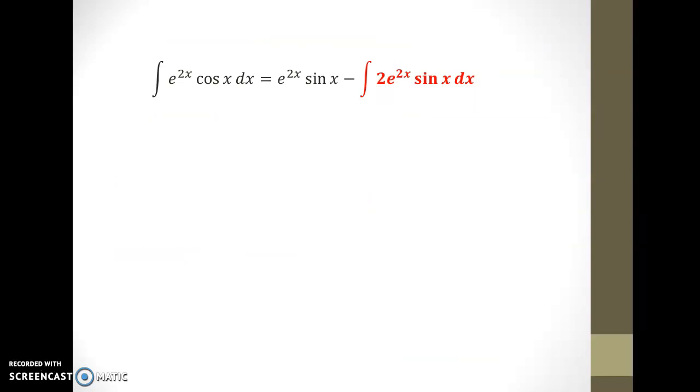Now, who do we choose as f and g prime? Well, I stuck with what I had made as a choice earlier. My exponential function was my previous f, so I've gone with 2e to the 2x as playing the role of f, and the remaining term sin x as being g prime. A second chain rule on e to the 2x now will give us an f prime of 4e to the 2x, and anti-differentiating sine will result in minus cos x.